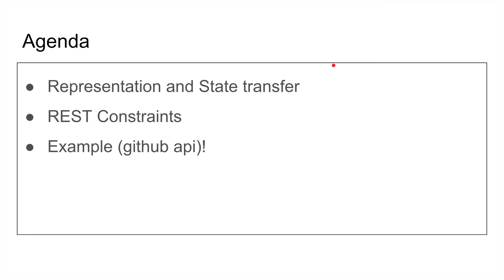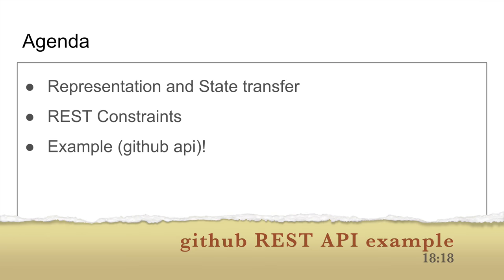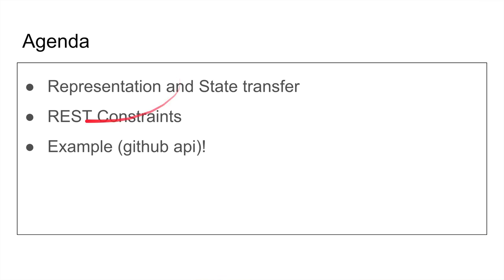Here's the agenda for today. We're going to talk about what a REST API is, and we're going to talk about the two key portions of it that Fielding named. REST stands for Representational State Transfer — the first part being 'representational' and the second being 'state transfer.'